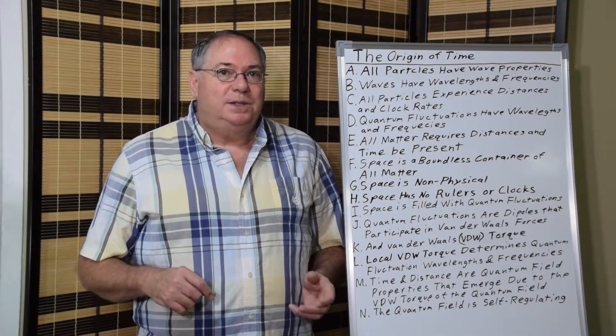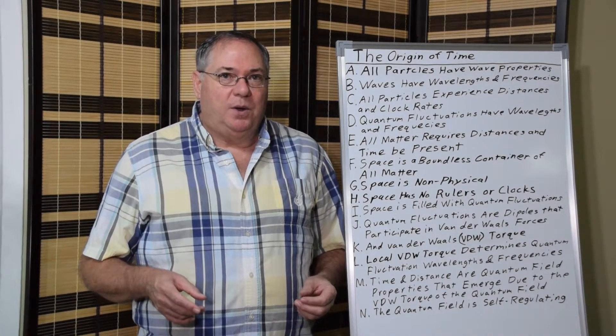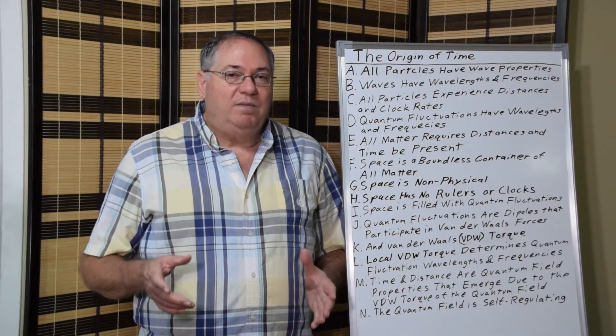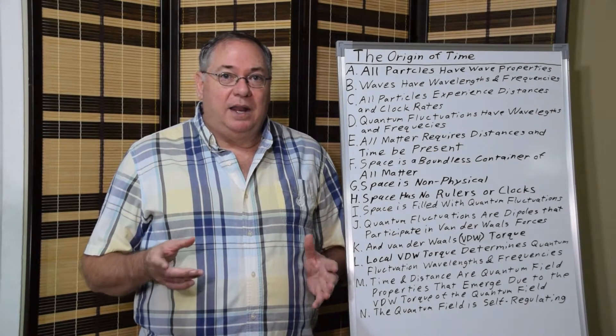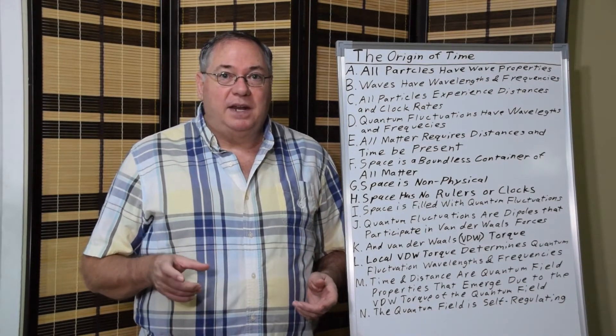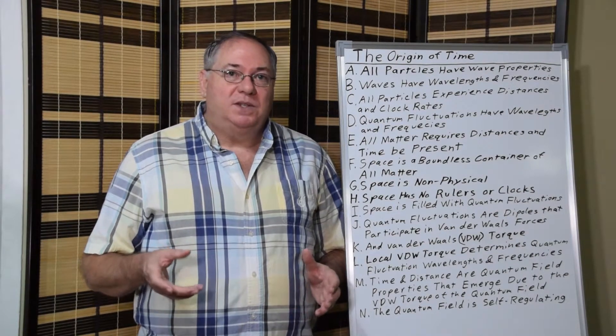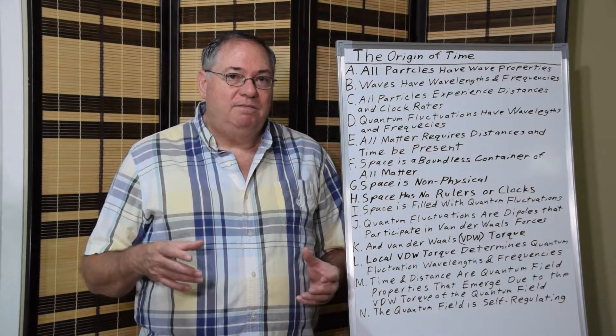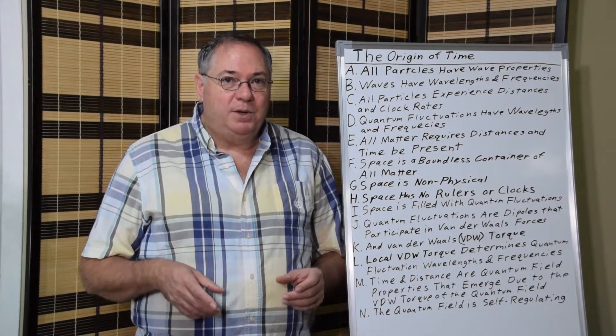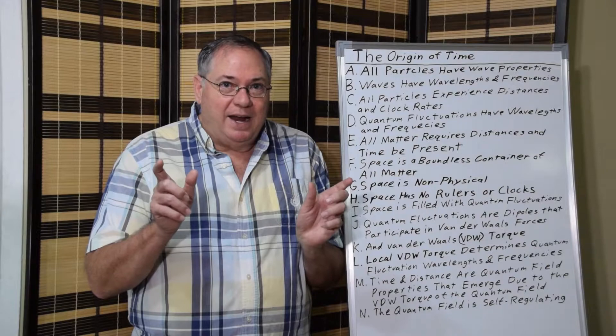And the way that happens is per the Casimir effect. We know that the quantum fluctuations are electric charge cycles. They have positive and negative charges that are linked together. And we know that because Casimir effect is Van der Waals forces, which happen between dipoles that interact with each other.